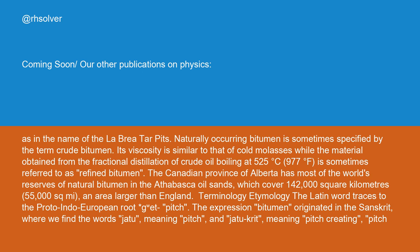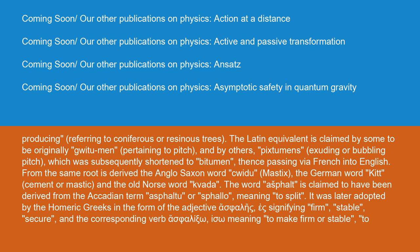Regarding terminology and etymology: the Latin word traces to the Proto-Indo-European root meaning pitch. The expression bitumen originated in Sanskrit, where we find the words jatu, meaning pitch, and jatakrit, meaning pitch-creating or pitch-producing, referring to coniferous or resinous trees. The Latin equivalent is claimed by some to be originally gwitumen, pertaining to pitch, and by others pyxtamins, meaning exuding or bubbling pitch, which was subsequently shortened to bitumen, thence passing via French into English.